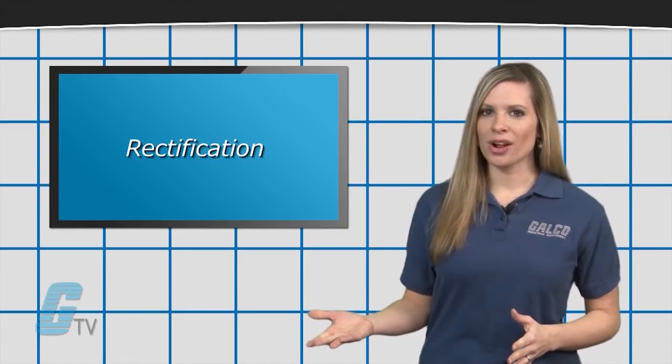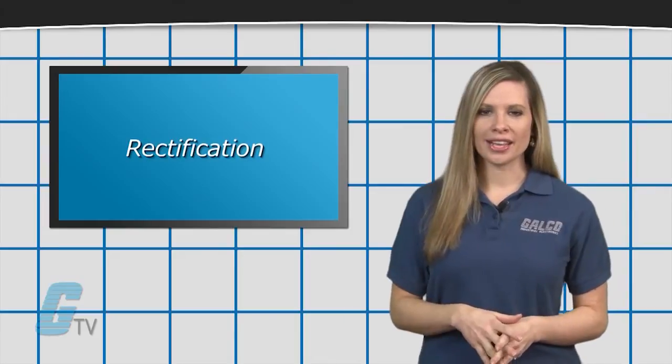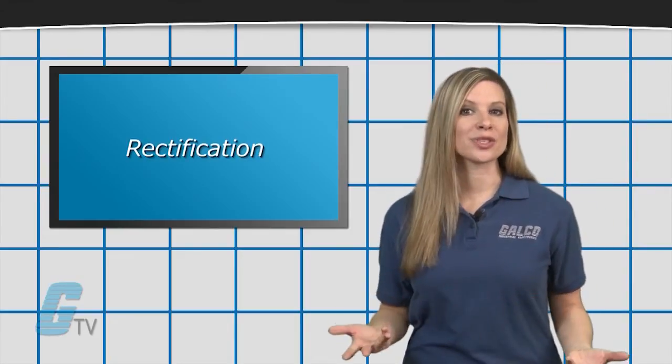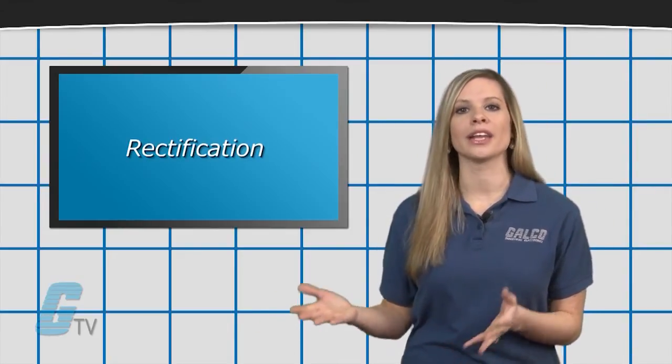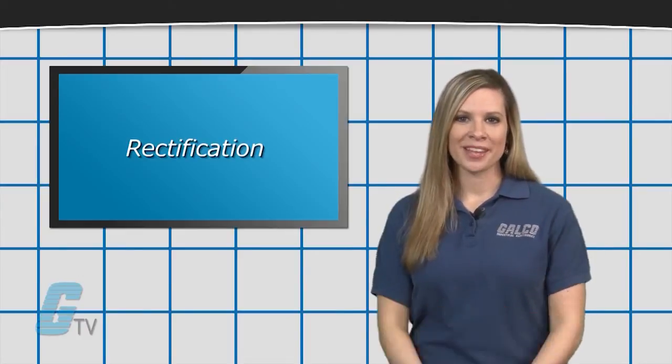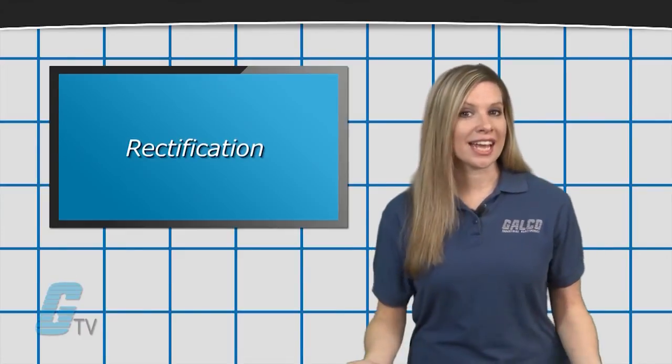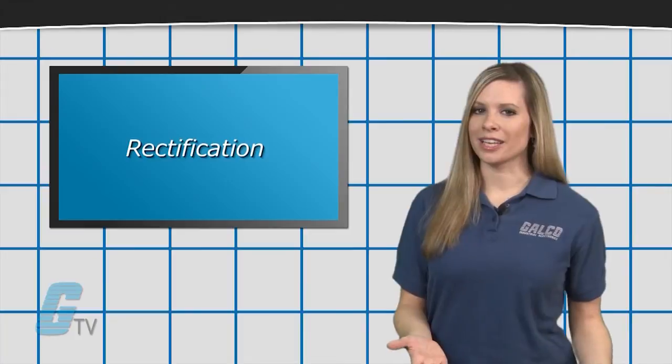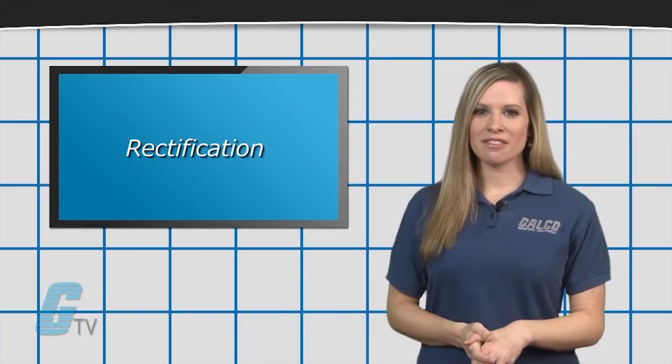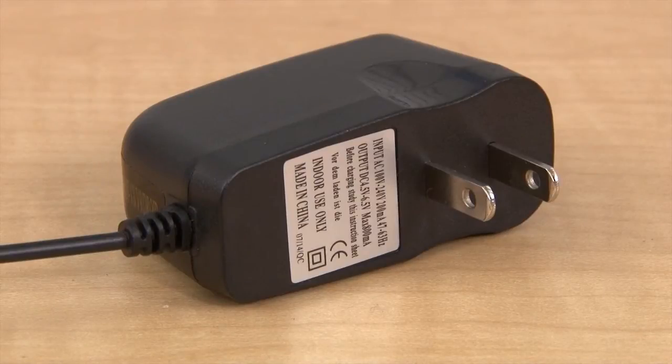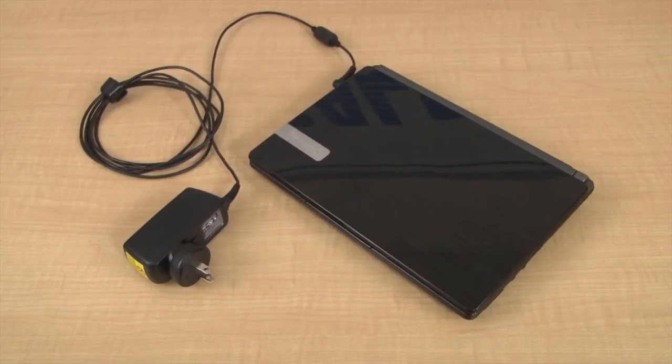Normally, this particular process will produce a ripple that can be smoothed out by a capacitor to eliminate the unwanted residual energy. This process is used every day in some of the most common applications. A good example of this is a cell phone charger that plugs into the wall or a laptop charger that also plugs into the wall.